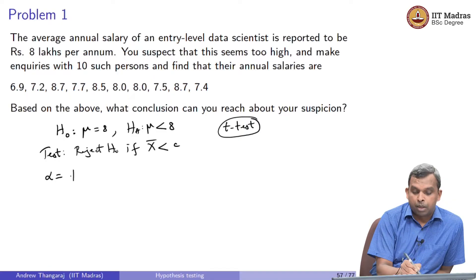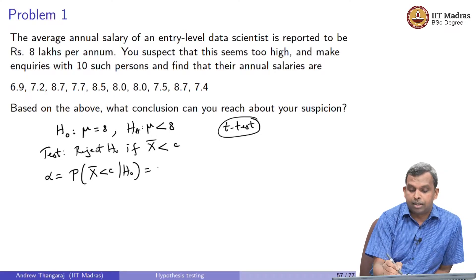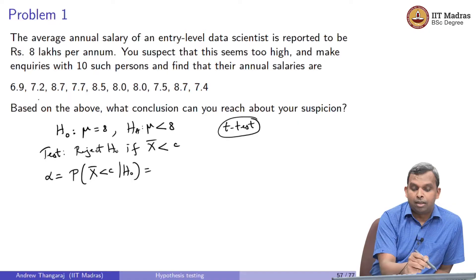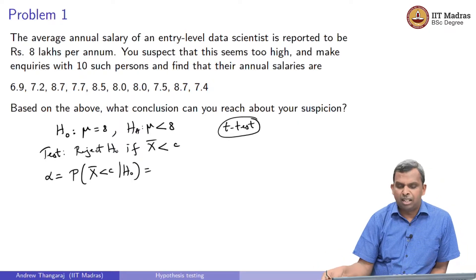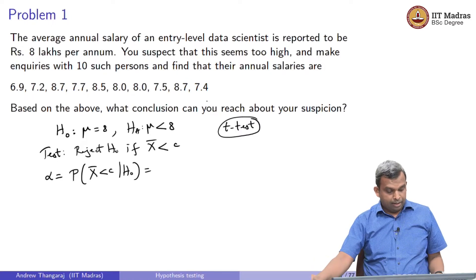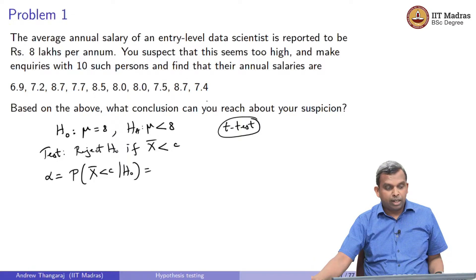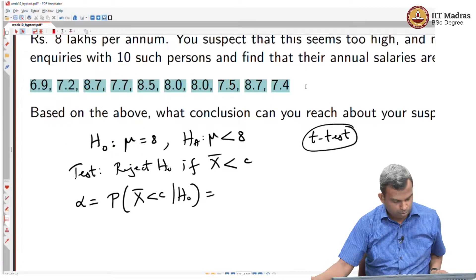You are going to set alpha as the probability that x̄ is less than c given H₀. To use the t-test you need the sample variance and the sample mean — the sample variance is at least something that you need. Let us go ahead and see how we can quickly calculate that. We need this data.